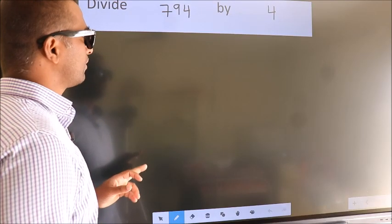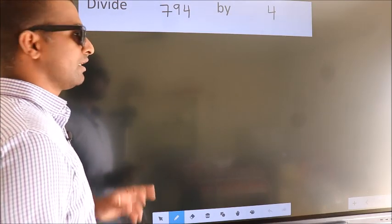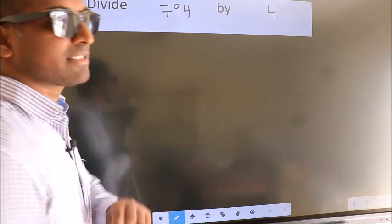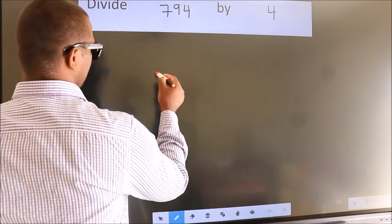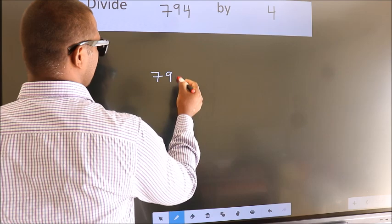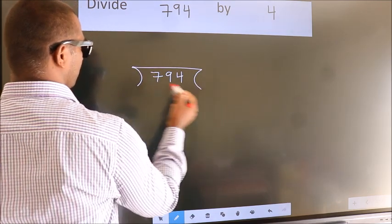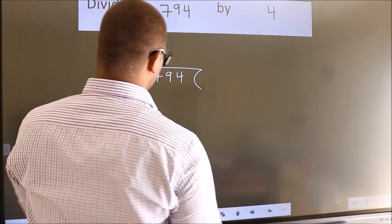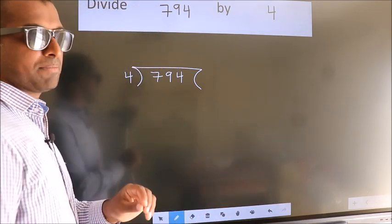Divide 794 by 4. To do this division, we should frame it in this way. 794 here, 4 here. This is your step 1.